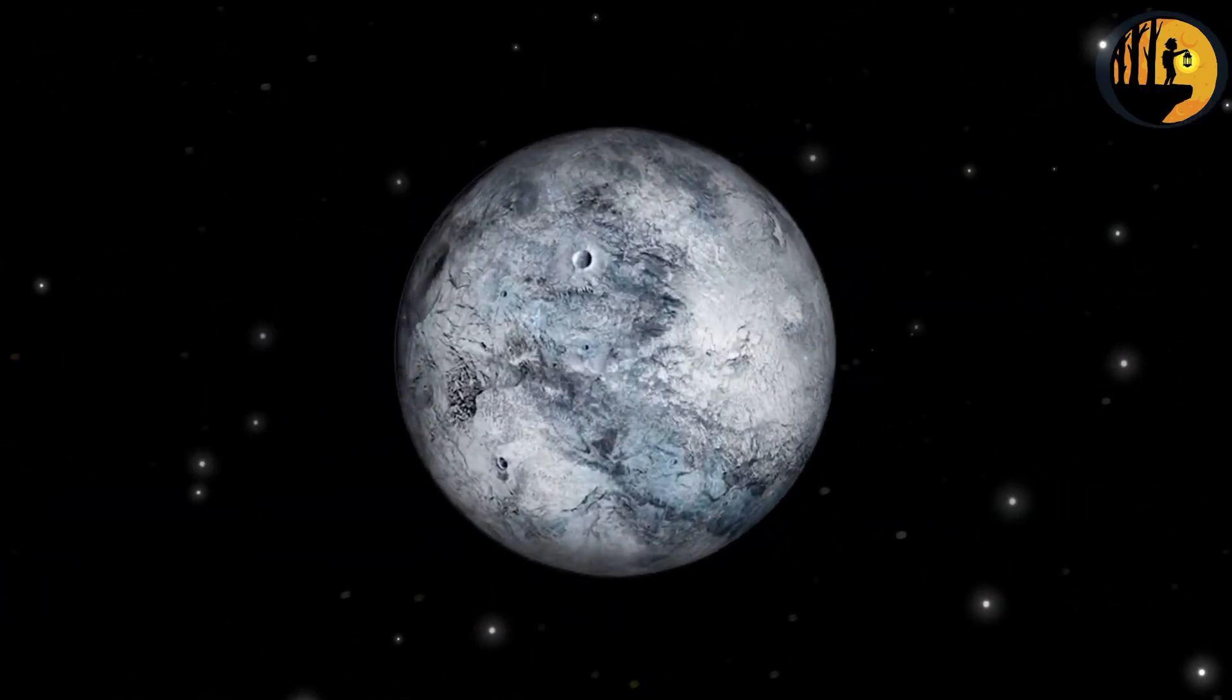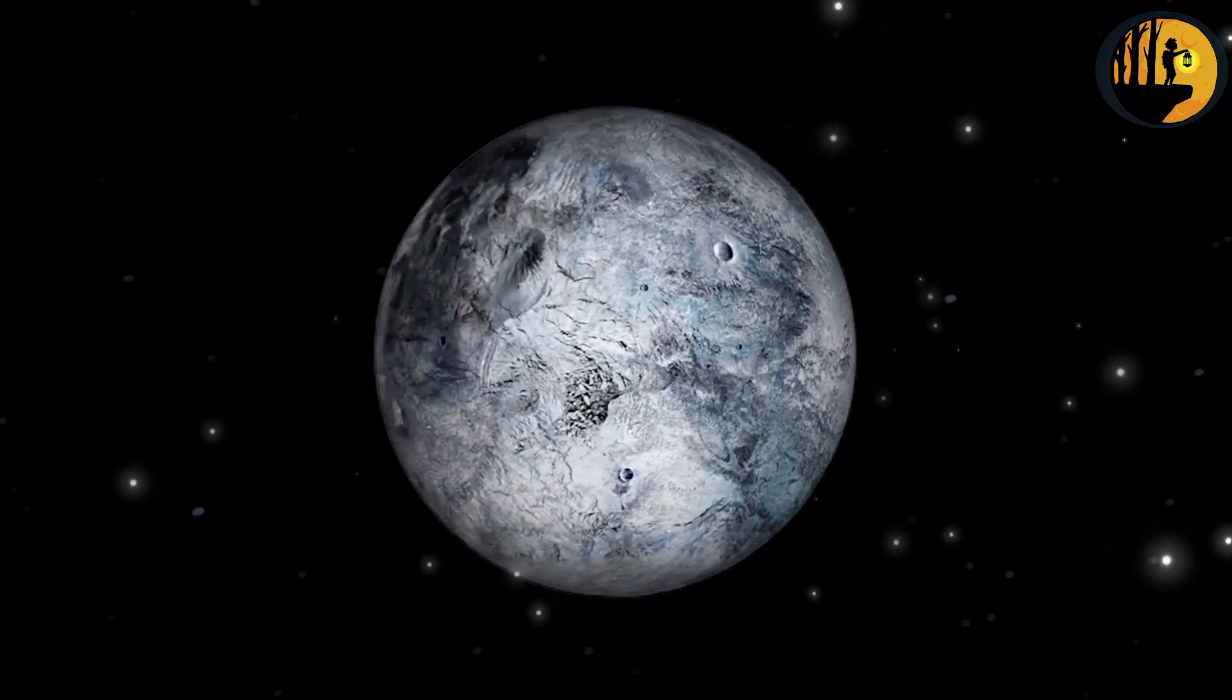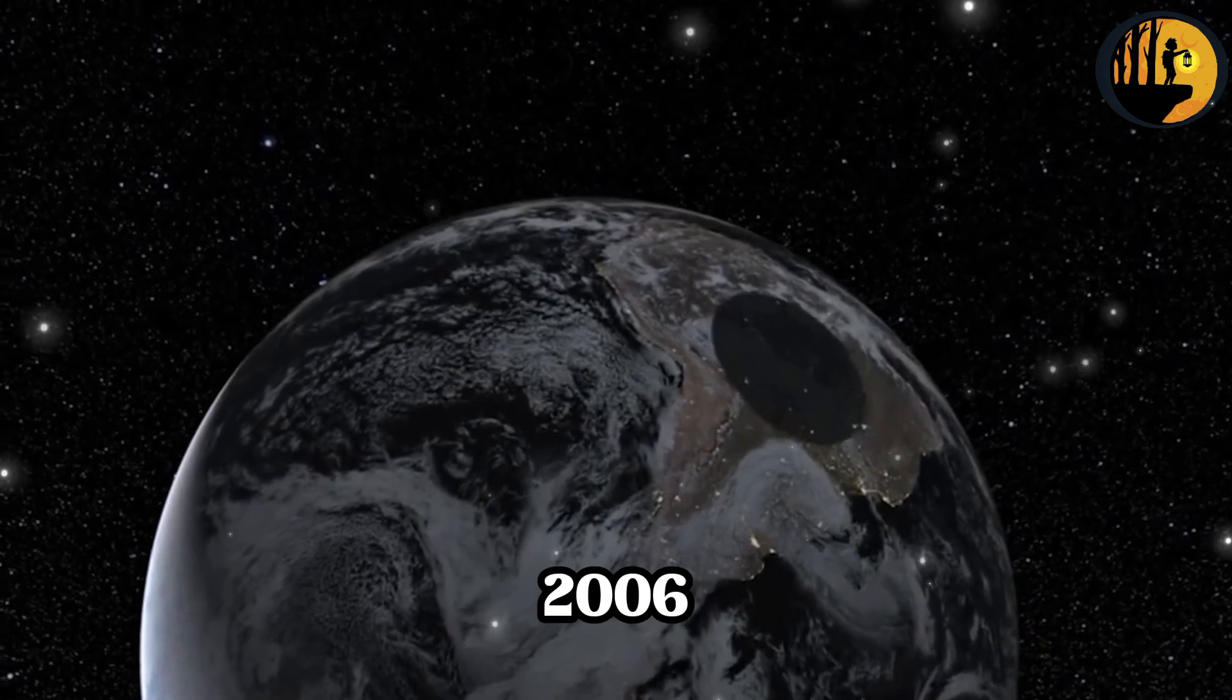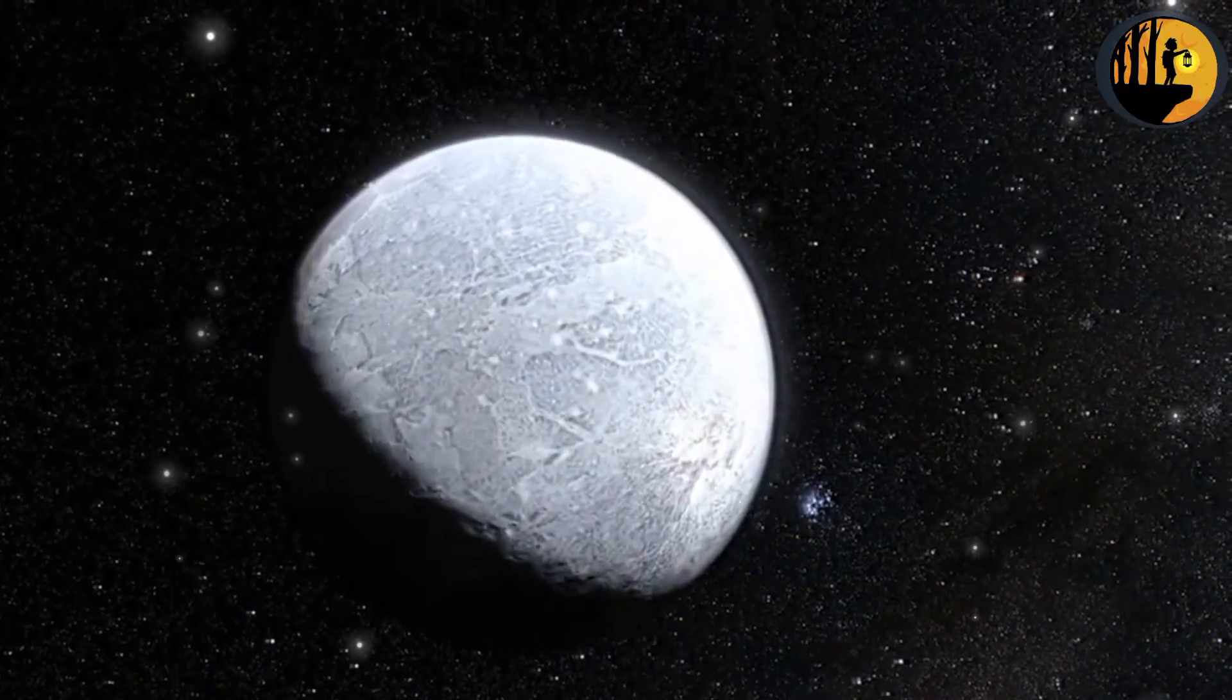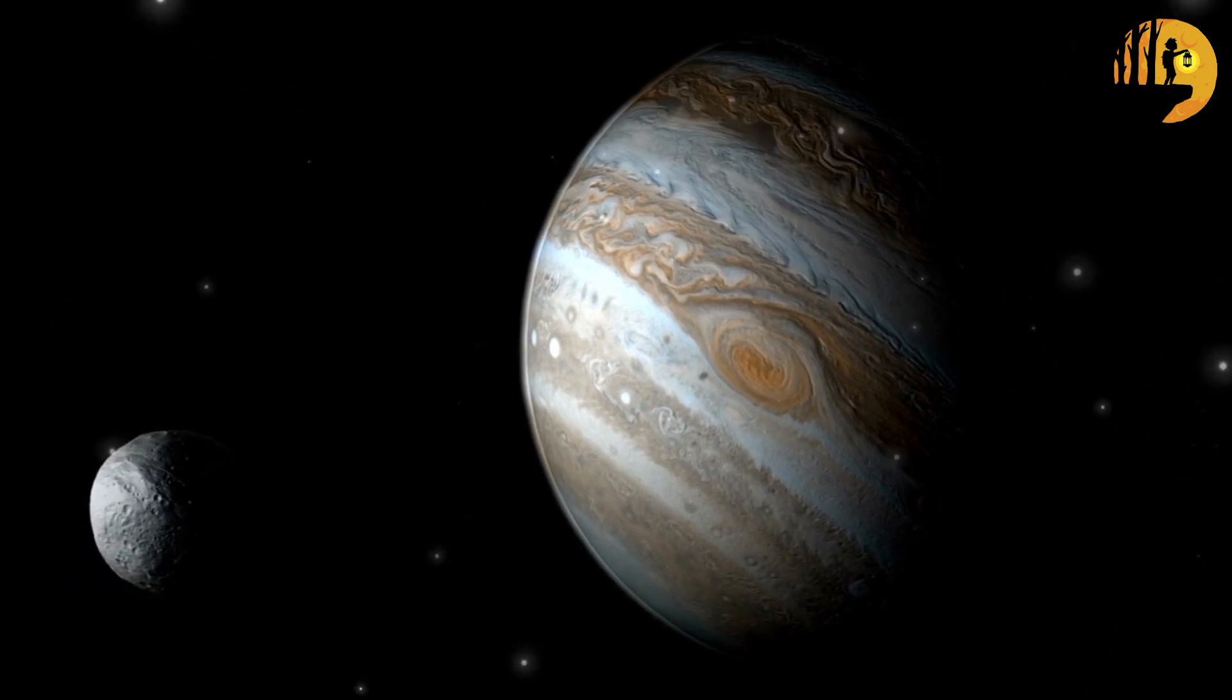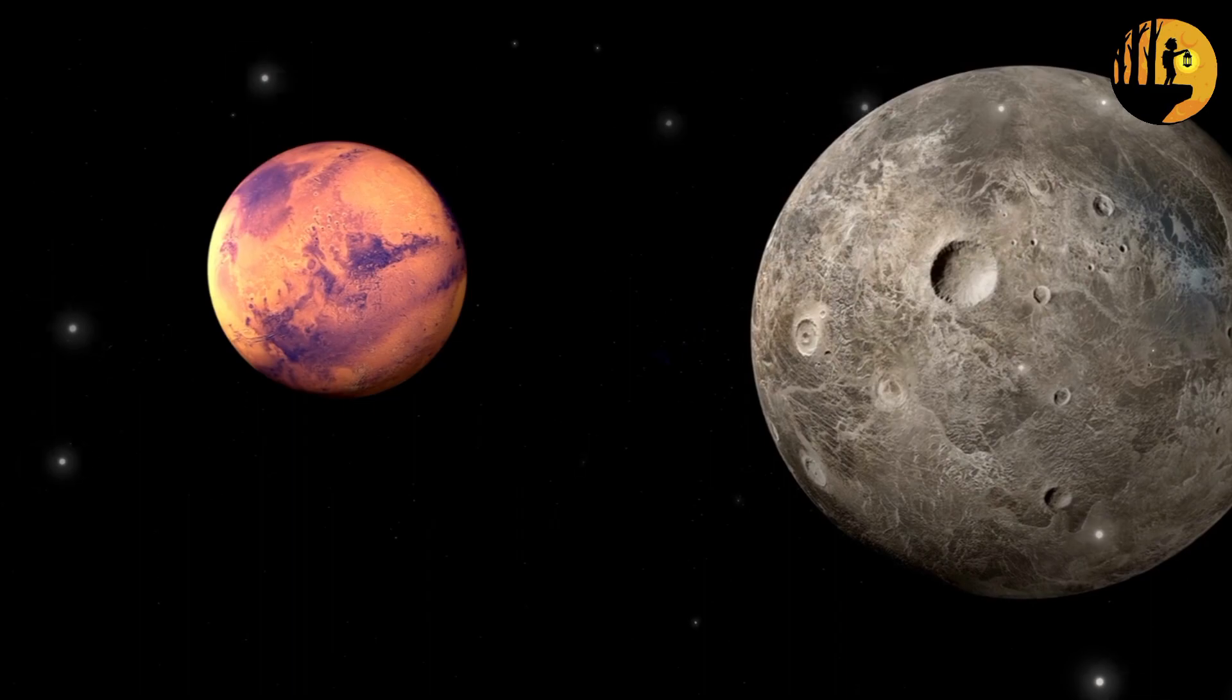Ceres is the largest object in the asteroid belt between Mars and Jupiter and was the first dwarf planet to be discovered. It was reclassified from an asteroid to a dwarf planet in 2006. Pluto, which was once considered the ninth planet, is the most famous dwarf planet. It resides in the Kuiper belt, a region beyond Neptune that is home to many icy objects.